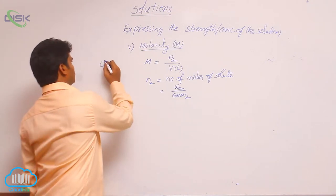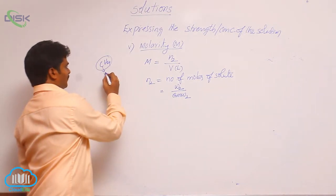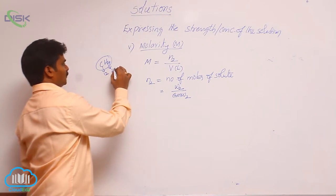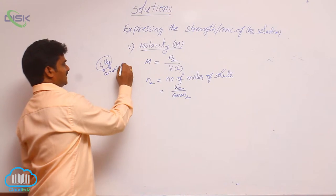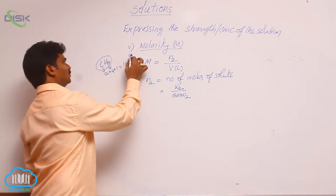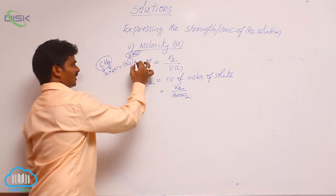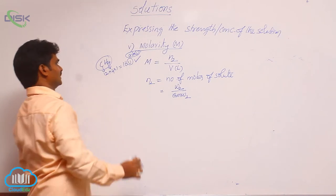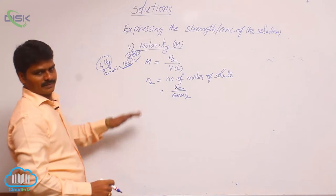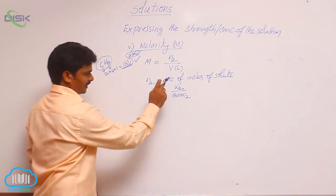If you take methane gas, the atomic weight of carbon is 12, and each hydrogen is 1, so 4 into 1. So 12 plus 4, that means 16 U. U means unified mass, or we can use AMU — atomic mass unit. Atomic mass unit is the world unit; regularly we use unified mass. So molecular weight of methane is 16 unified mass. In that way, from the formula, we calculate gram molecular weight.